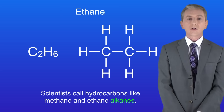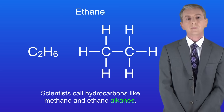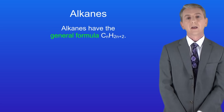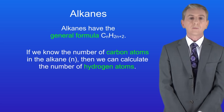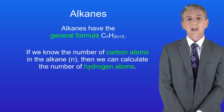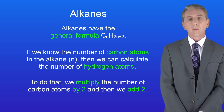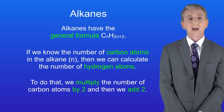This can look a bit tricky but please stick with it and you will get it. The key feature of alkanes is that they have the general formula CₙH₂ₙ₊₂. What this means is that if we know the number of carbon atoms in the alkane — in other words n — then we can calculate the number of hydrogen atoms by multiplying the number of carbon atoms by 2 and then adding 2.